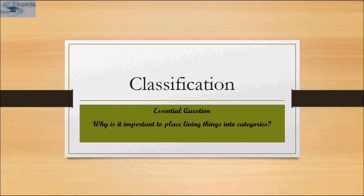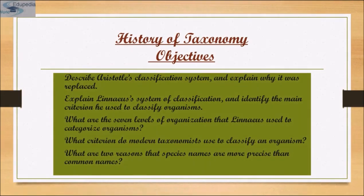That is why it is important to place living things into categories. Now, what is the history of taxonomy and what were the objectives behind it? First, to describe Aristotle's classification system and explain why it was replaced. Second, explain Linnaeus's system of classification and identify the main criterion he used to classify organisms. Third, what are the seven levels of organization that Linnaeus used to categorize organisms? Fourth, what criteria do modern taxonomists use to classify an organism? And fifth, what are two reasons that species names are more precise than common names?